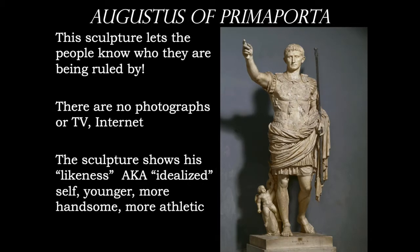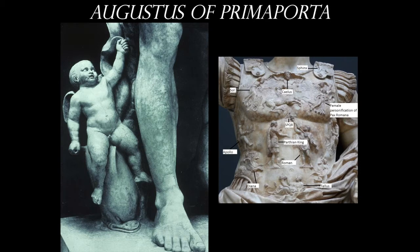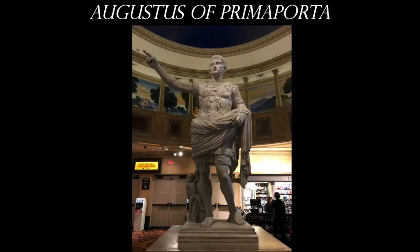The sculpture shows an idealized version of Augustus — someone who is young, handsome, athletic, and godlike. He is related to the gods just by looking at the sculpture itself. On the breastplate alone, we have the god of the sky and the goddess of the earth. Down at his foot, we also have Cupid, the son of Venus. Now Augustus could trace his ancestry back to Aeneas, and he also claimed to be the son of Venus — so that makes Cupid Augustus's nephew. And where else would a sculpture like this be but at Caesar's Palace in Las Vegas.